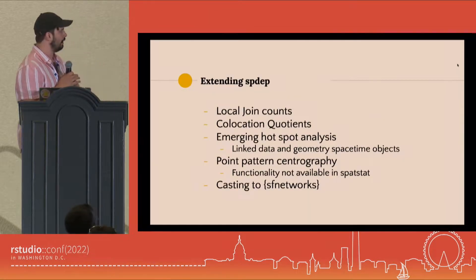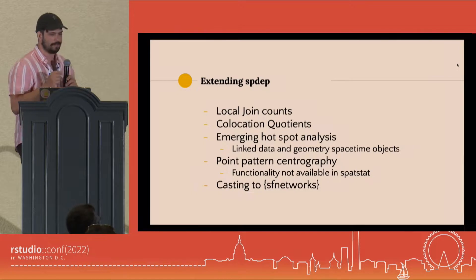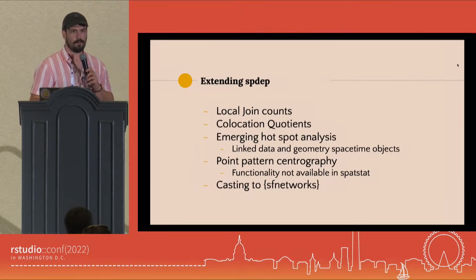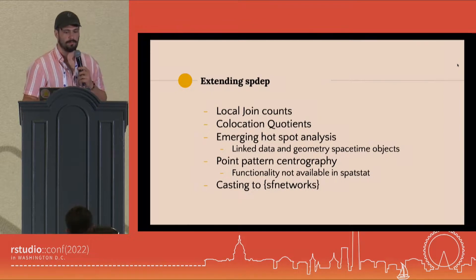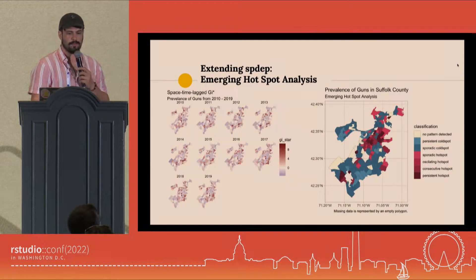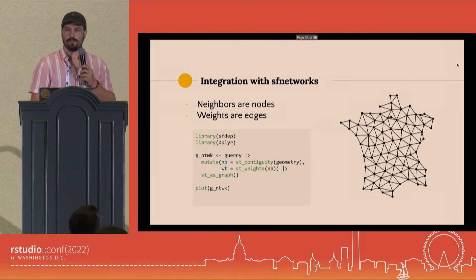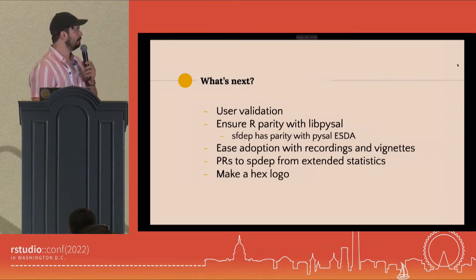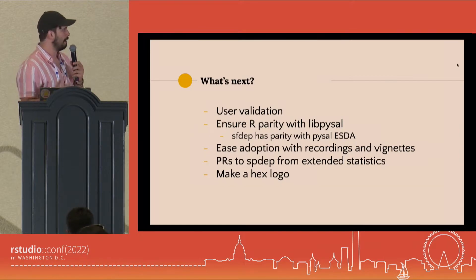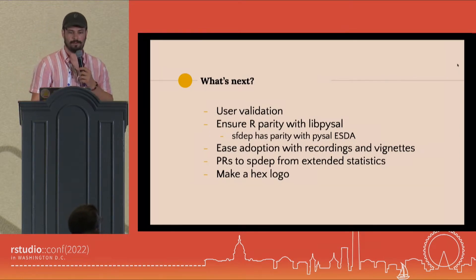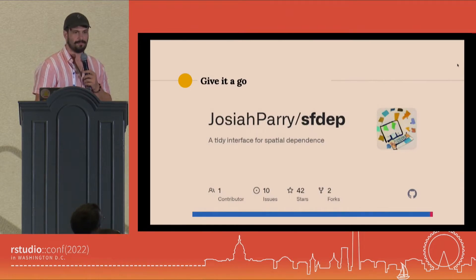sfdep doesn't just act as an interface — it extends spdep as well. We can do local join counts, the first open source implementation of co-location quotients, and it also implements Esri's emerging hotspot analysis. It also integrates with sfnetworks. What's next? User validation, ensuring parity with Python, and making a hex logo one day. Give it a star and give it a go.